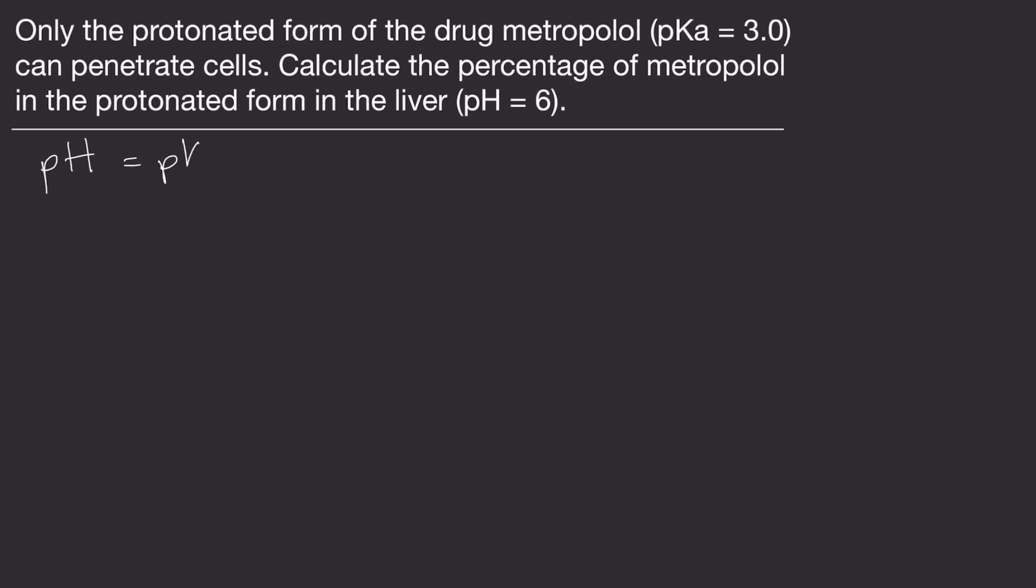We're going to start with the Henderson-Hasselbalch equation. First, you should identify your variables in the problem. It looks like we have a pH of 6, which are underlined in yellow. We also have a pKa of 3, which I underlined in green.